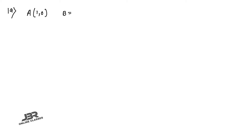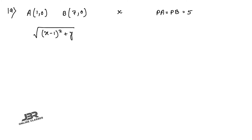Sum number 19: A = (1, 0) and B = (7, 0) are two points on the x-axis. A point P in the first quadrant forms an isosceles triangle PAB where PA = PB = 5 units. Find the equation of the circle described on PA as diameter. First apply the distance formula: (x−1)² + y² = (x−7)² + y².